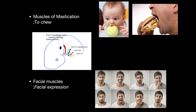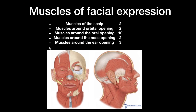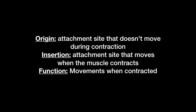In this video we're going to cover the facial muscles. The muscles of facial expression are divided into five groups: muscles of the scalp, muscles around the orbital opening, muscles around the oral opening, muscles around the nose opening, and muscles around the ear opening. Before I start, I'll explain the basics of how a muscle is attached in your body. A muscle has two attachment points: origin and insertion. Origin is the attachment site that does not move during contraction, while insertion is the attachment site that moves when the muscle contracts. Function is the movement of the muscle when contracted.